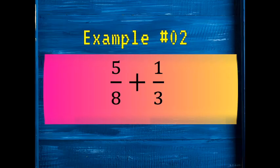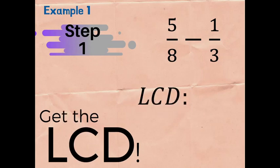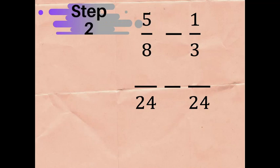For example number two: 5/8 plus 1/3. Again, the first step is to get the LCD. The LCD of 8 and 3 is equal to 24. Step two: we put 24 as the LCD on the bottom part of the original fractions.